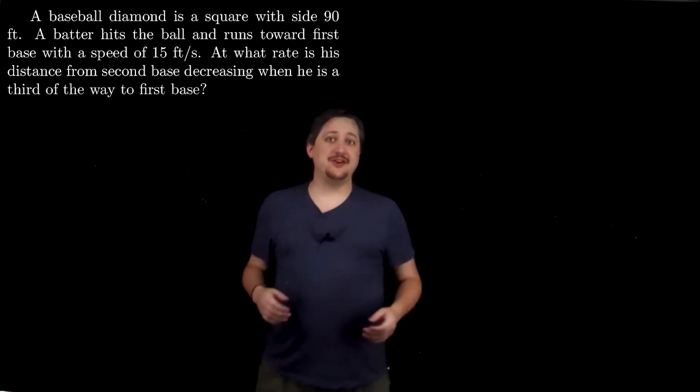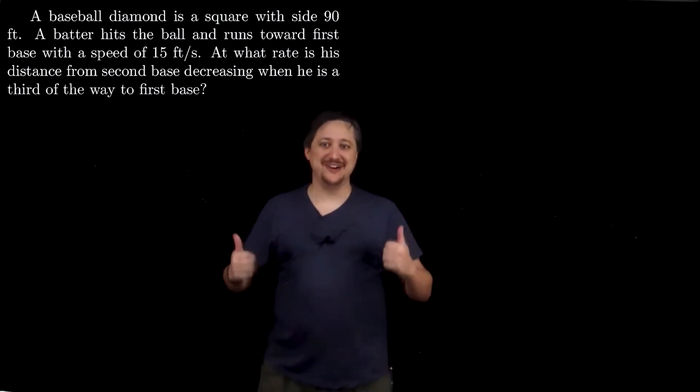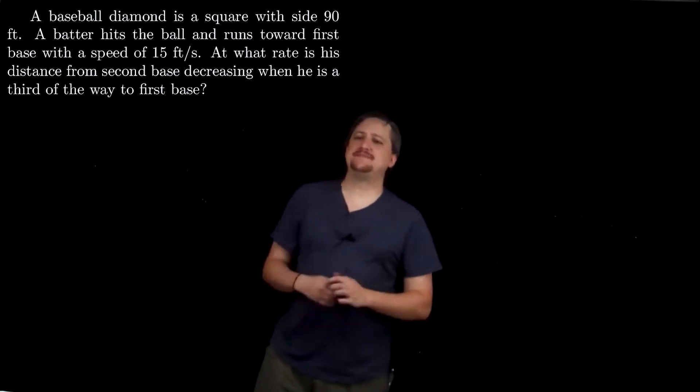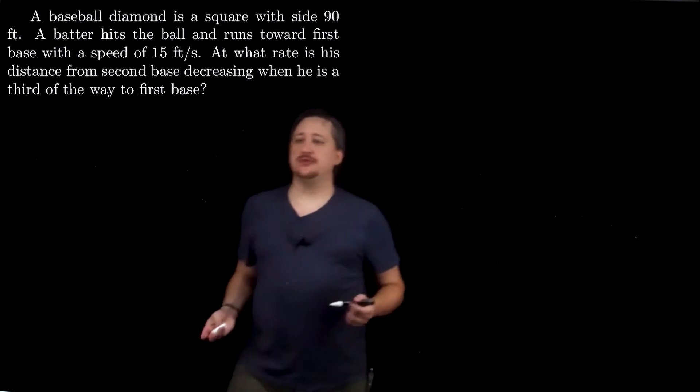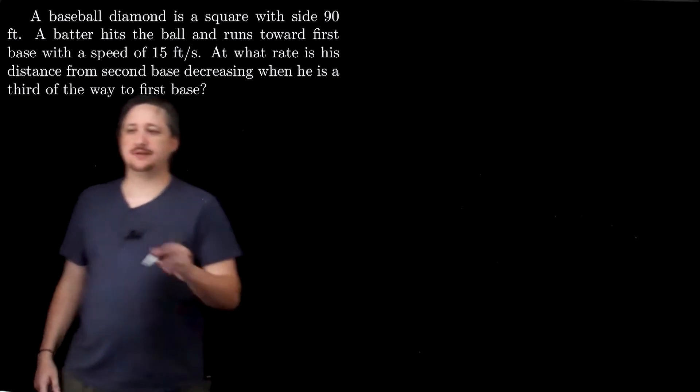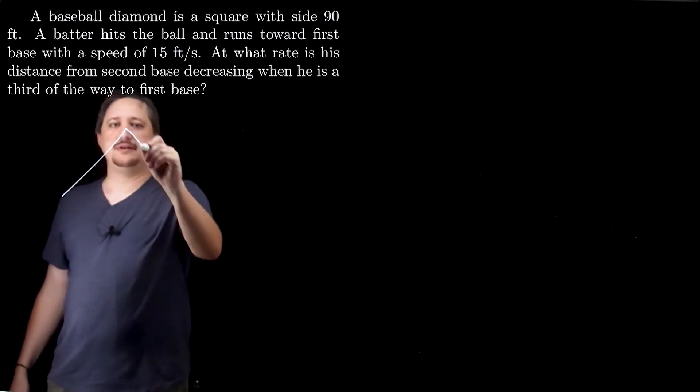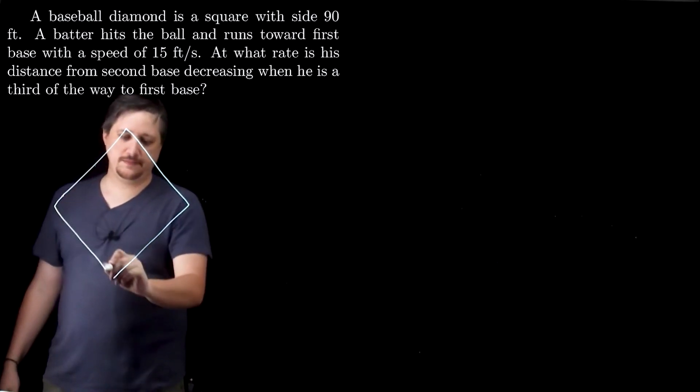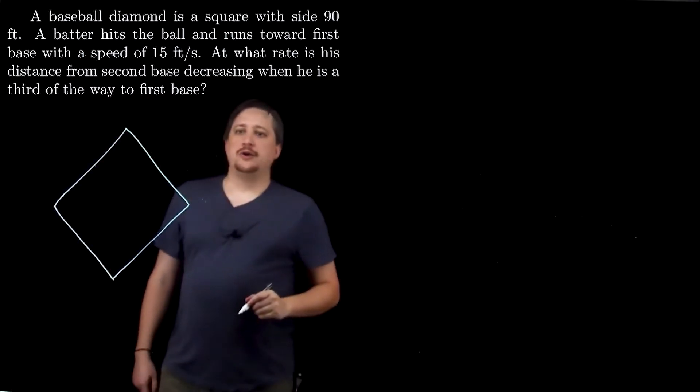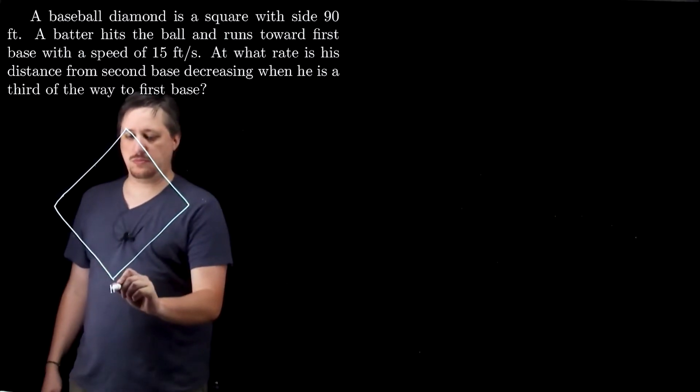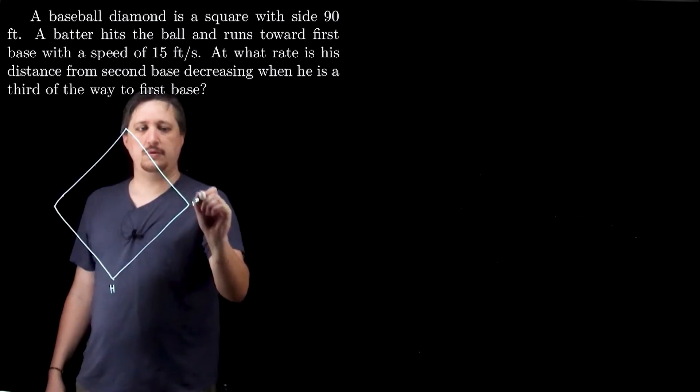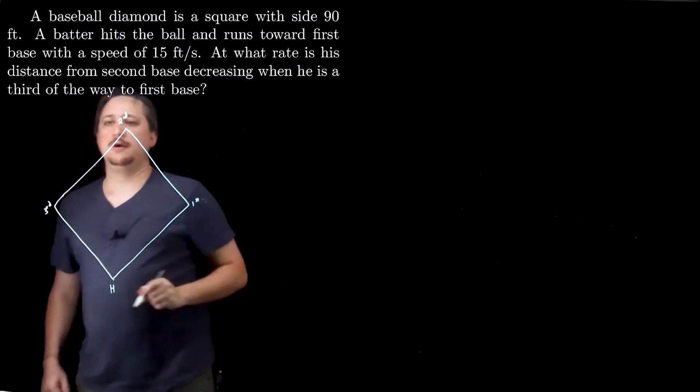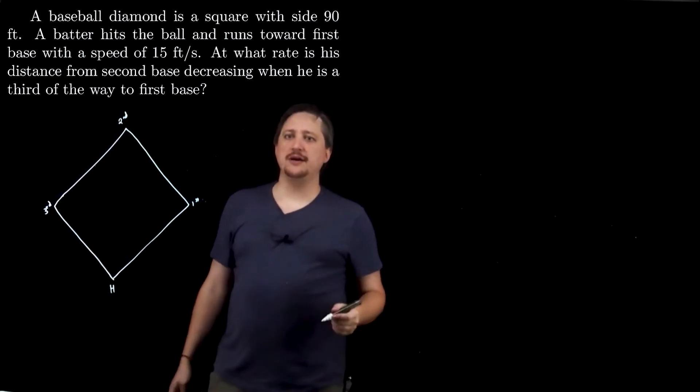Hello. So this example, another word problem. Hooray, hooray. This is another related rates problem. Excuse me. So we have a baseball diamond. So I'm going to start by making a picture. So let's see. So we have sort of baseball diamond here. So this is home, first, second, third.